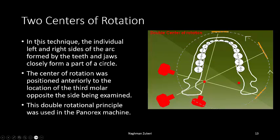For two centers of rotation: the individual left and right sides of the arc formed by the teeth and jaws closely form part of a circle. The center of rotation was positioned anteriorly to the location of the third molar, opposite to the site being examined. When examining one side, the center is on that side, and when examining the other side, the center shifts accordingly. This double rotational principle was used in the Panorex machines.